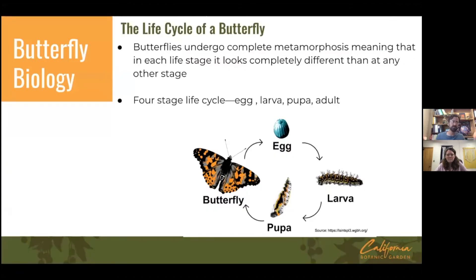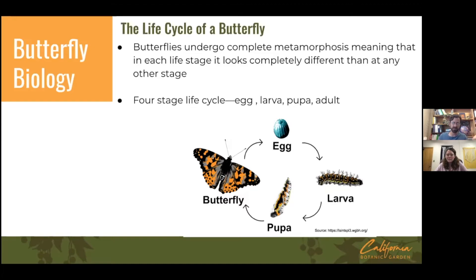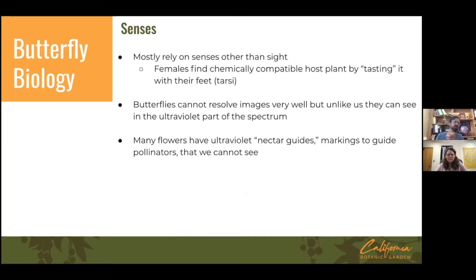Butterflies undergo complete metamorphosis, meaning each life stage looks completely different from the others. They go from an egg, hatch out as a caterpillar — which is basically an eating machine whose job is to store enough food reserves to make it through the pupal stage — then form a pupa called a chrysalis, and emerge as a butterfly. That whole process from egg-laying to emerging as an adult typically takes one to two months.